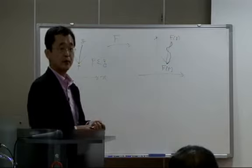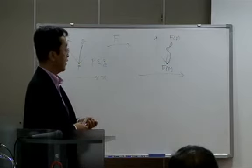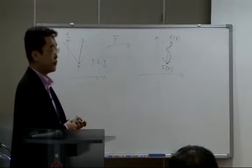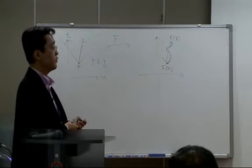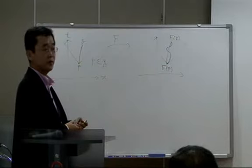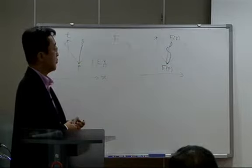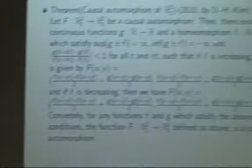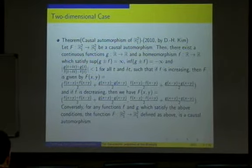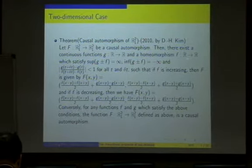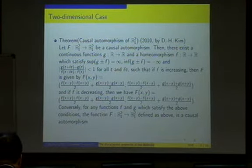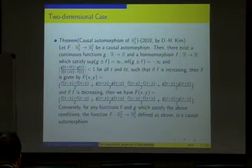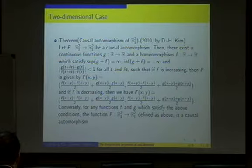This is the answer to the open problem. For any given causal automorphism on Minkowski two-space, we can find a continuous function on the real line and one homeomorphism on the real line that satisfies these three conditions, such that if the homeomorphism F is increasing, the causal automorphism has this form, and if the homeomorphism is decreasing, the causal automorphism has this form. Conversely, for any given continuous function and any homeomorphism on the real line satisfying these three conditions, the function defined in this way becomes a causal automorphism on Minkowski two-space.